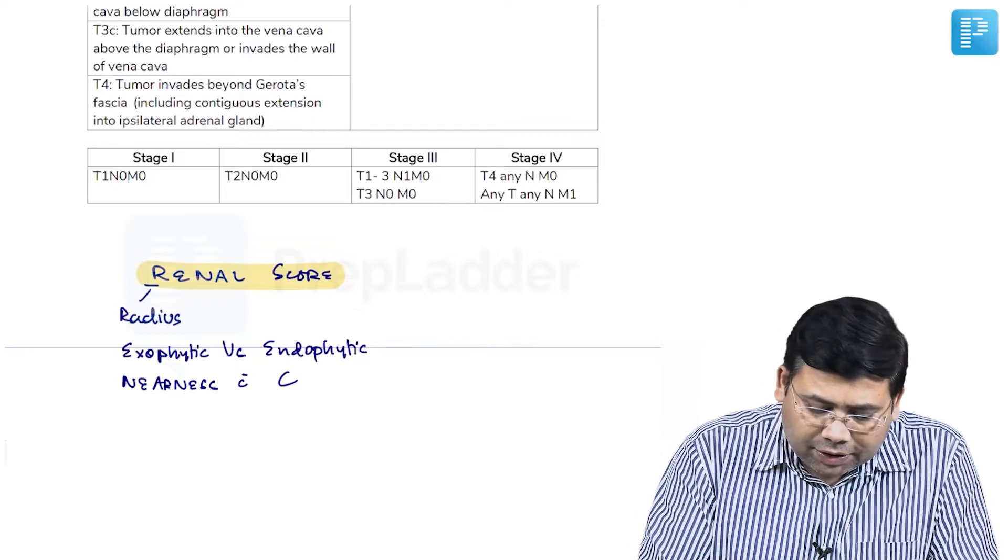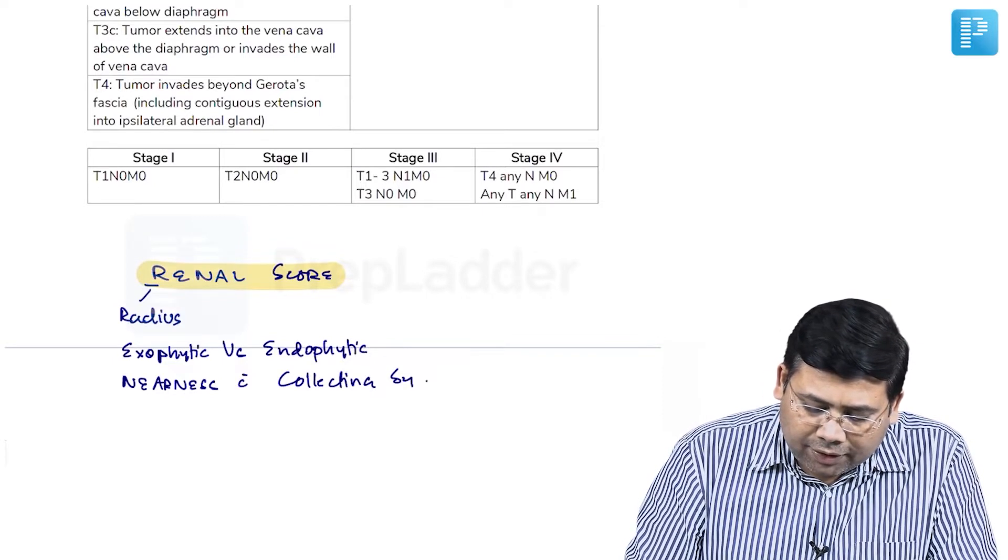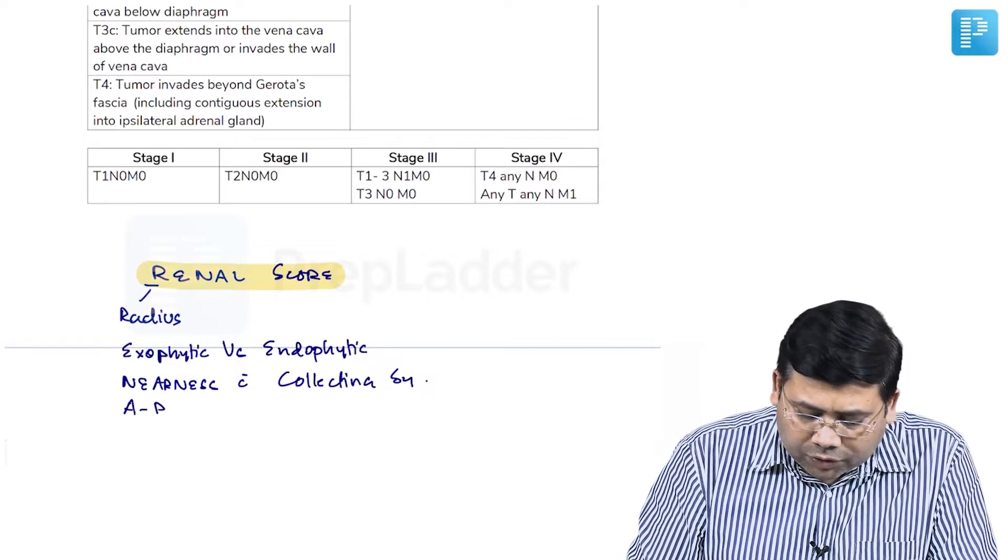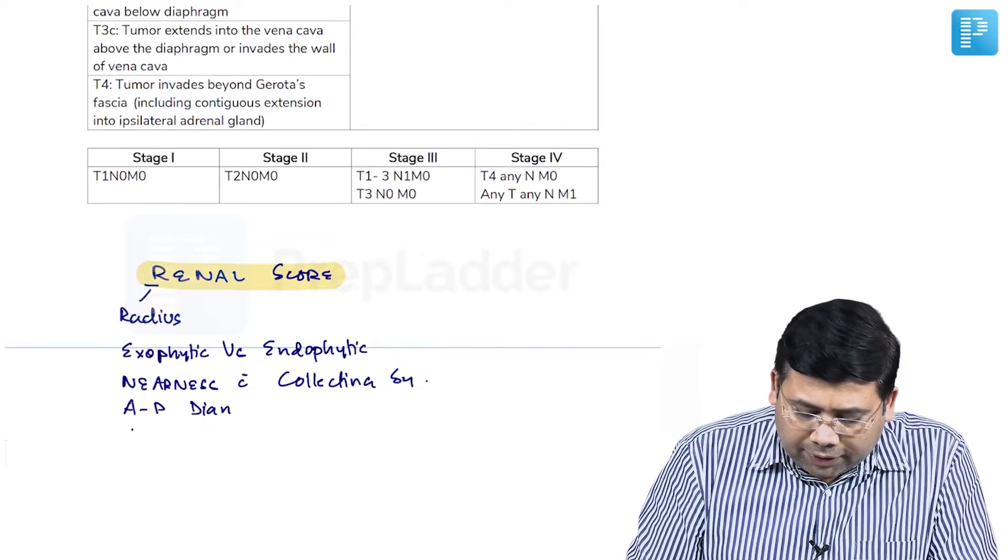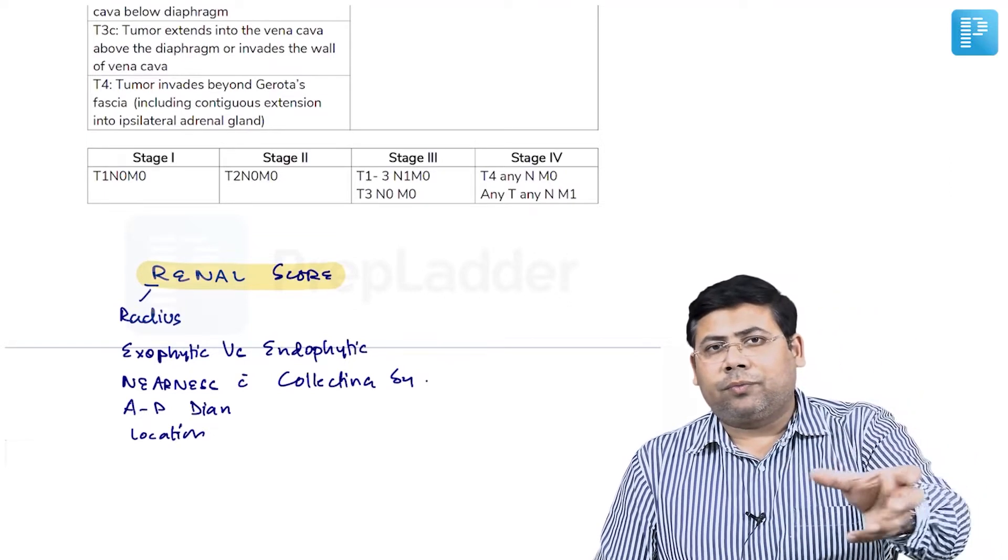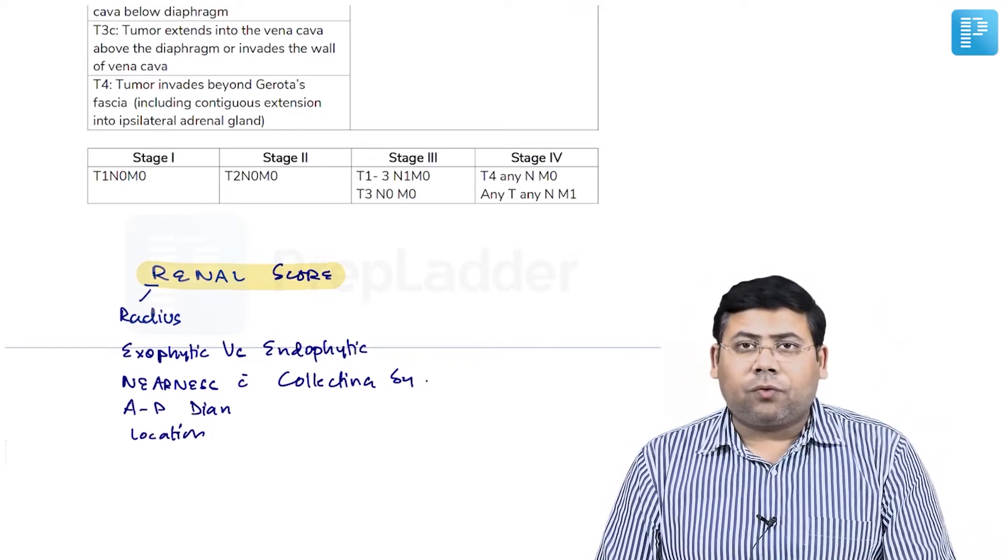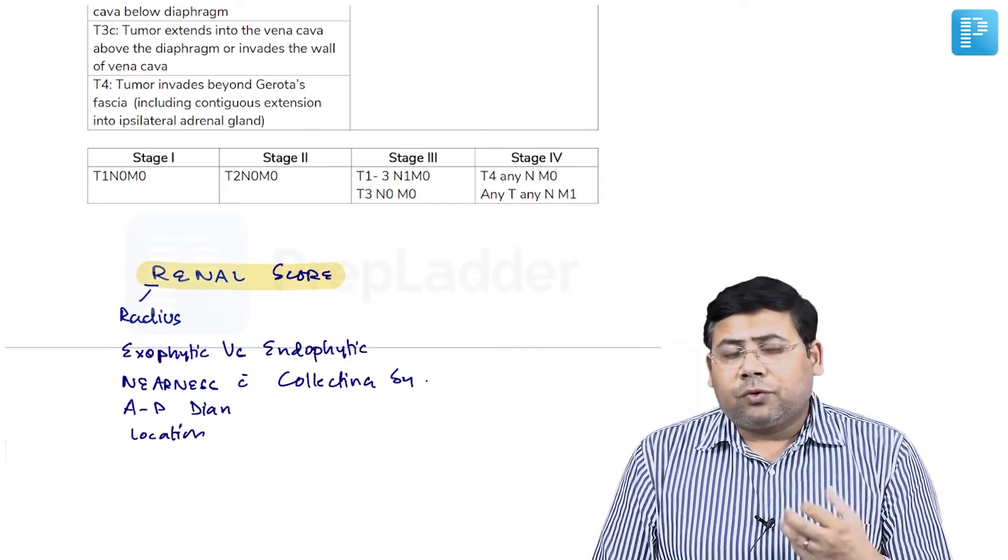A stands for anteroposterior diameter, and L stands for location—where it is located: superior pole, inferior pole, or hilum. This RENAL score helps you decide whether to go for partial versus radical nephrectomy.